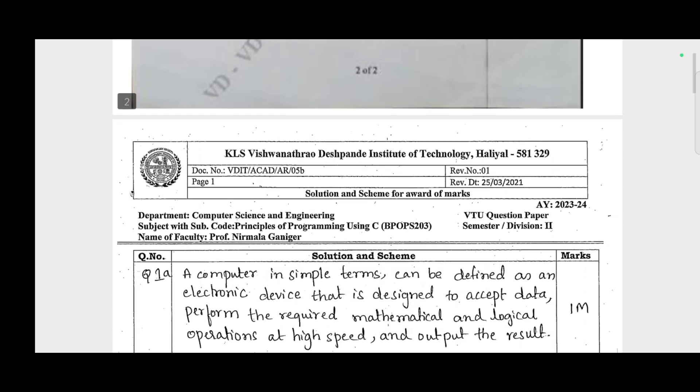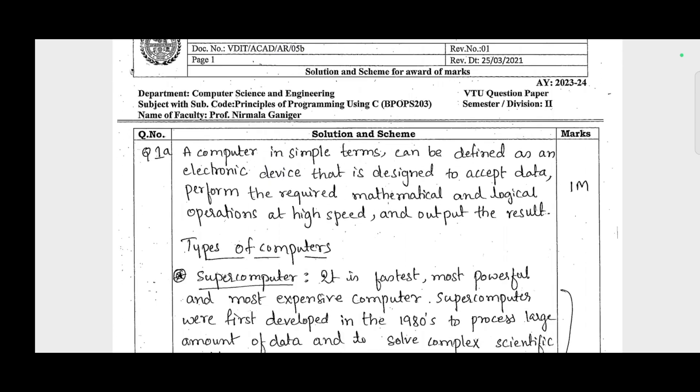First part is define computer. Once you write down the definition part like this: a computer in simple terms can be defined as an electronic device that is designed to accept data, perform the required mathematical and logical operations at high speed and output the result. This is the definition part.